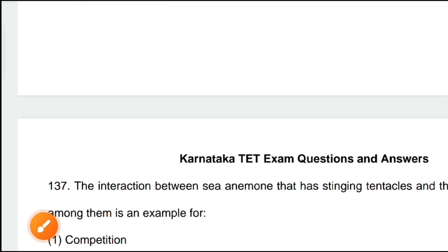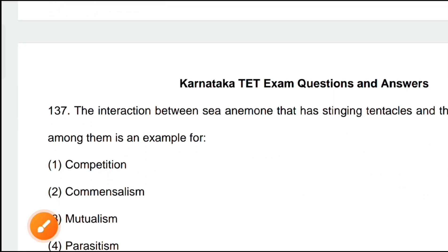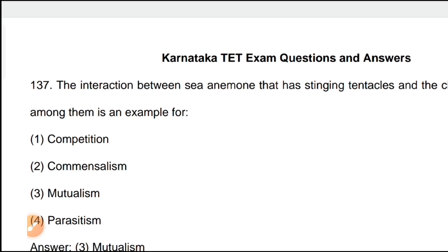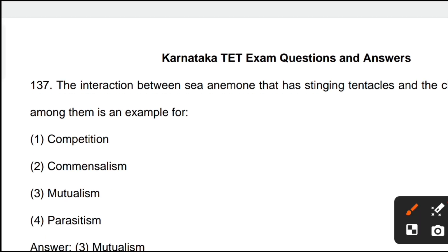Last question, 137: the interaction between a sea anemone that has stinging tentacles and a clownfish that lives among them is an example of option 3 — mutualism is the correct answer.